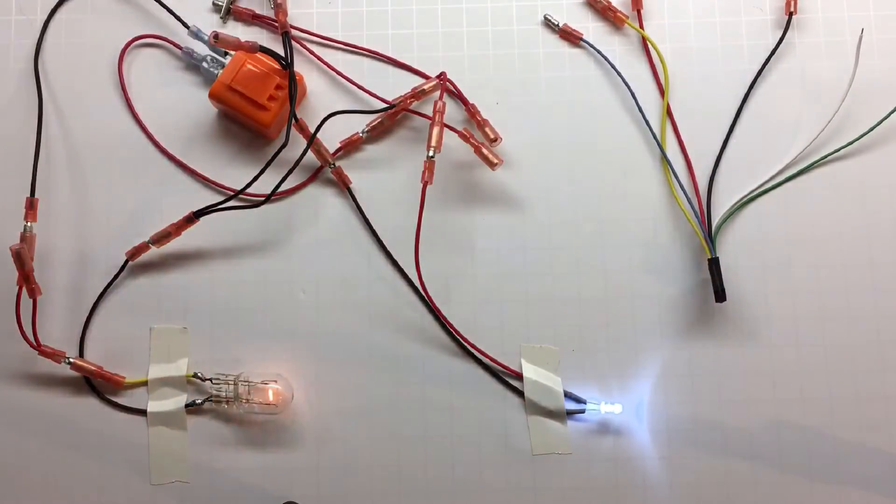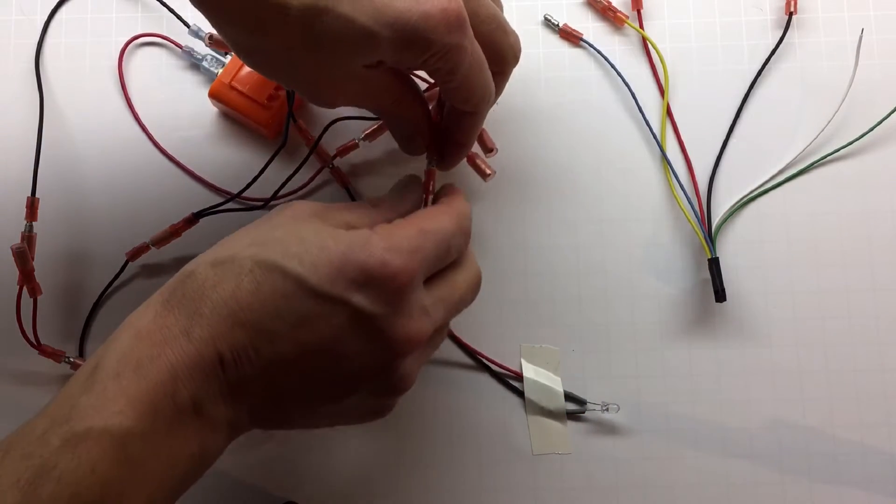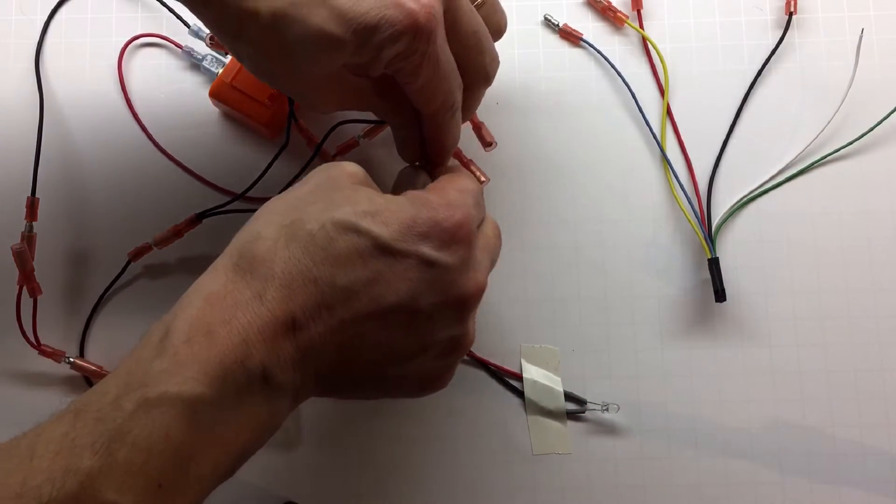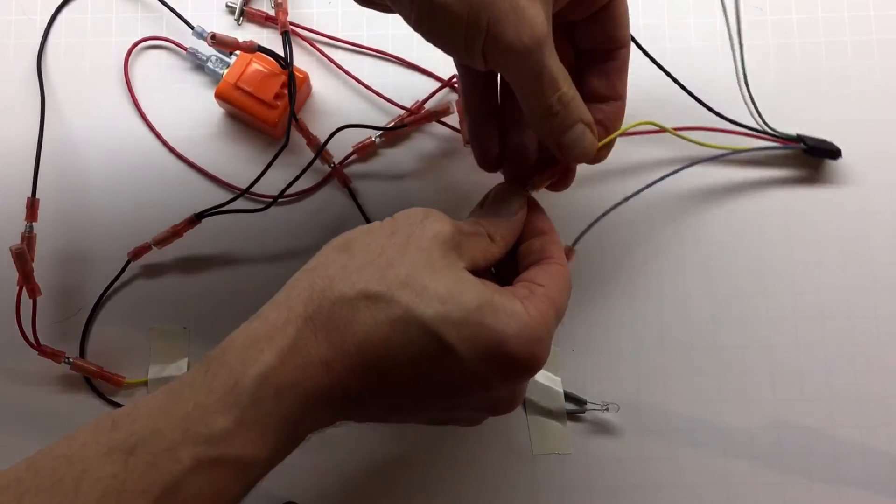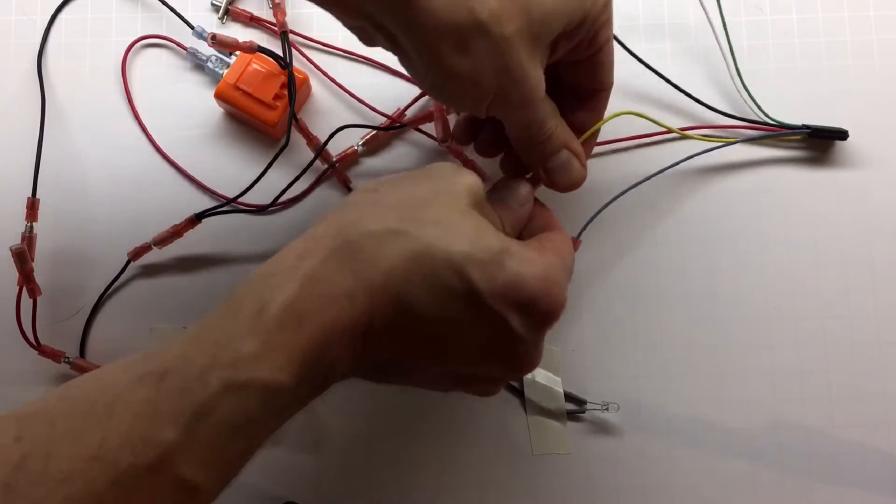So now we're going to connect the timer. I'm going to cut the wire going to the running lights and connect the timer output yellow wire to the light.